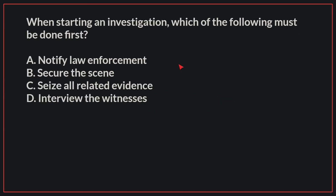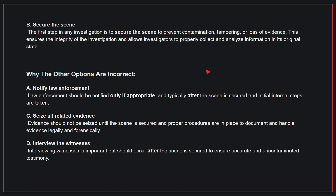When starting an investigation, which of the following must be done first? The correct answer is B. Secure the scene. The first step in any investigation is to secure the scene to prevent contamination, tampering, or loss of evidence. This ensures the integrity of the investigation and allows investigators to properly collect and analyze information in its original state.